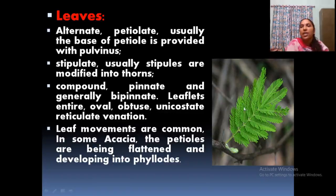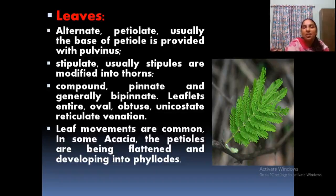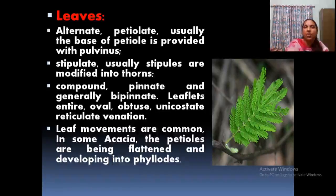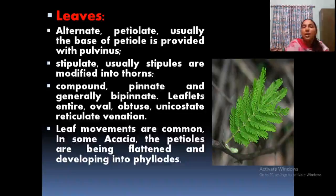The leaves are pinnately compound leaves. The touch-me-not plant leaf — when you just touch it, everything will be folded, so there are sensitive movements. The leaves are petiolate. A very important point: at the base of the leaf you can see a structure called pulvinus — this was also studied in Fabaceae, a common feature of family Leguminosae. Stipulate leaves are usually present; sometimes stipules are modified into thorns.